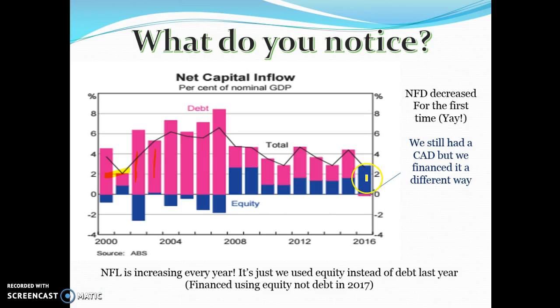The blue line being above that line means that foreign asset purchases of Australian products exceeded our investments overseas. Anything above that line means our net foreign liabilities are increasing in that given year. The net of the blue and pink lines is always more above than below the line, which means our net foreign liabilities are increasing every single year.